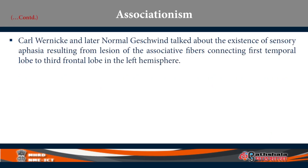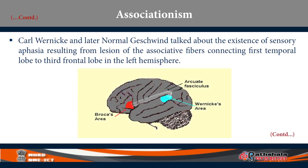Karl Wernicke and later Norman Geschwind talked about associationism and the existence of a particular aphasia called sensory aphasia, resulting from a lesion of associative fibers connecting the temporal lobe to the third frontal convolution — Broca's area — in the left hemisphere. In the picture on screen, the blue area is Wernicke's area, the red area is Broca's area, and you can see a band of white fibers connecting the two. This association is what they emphasize as playing an important role in language functions.